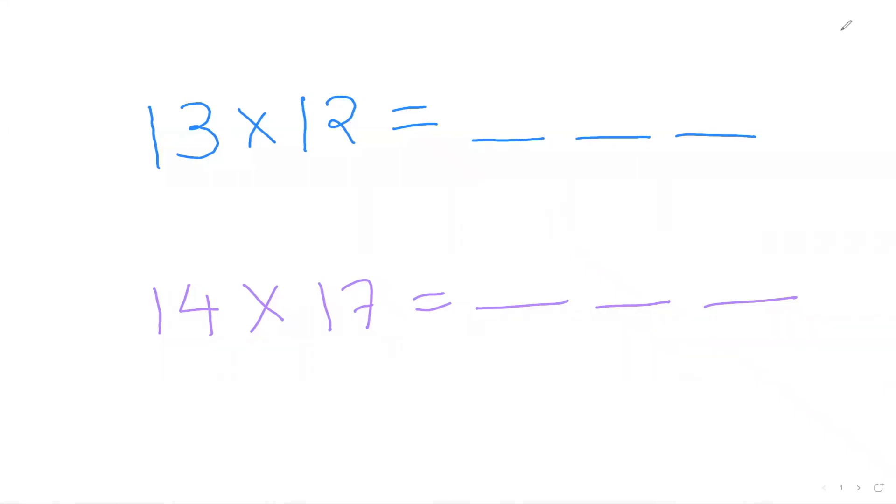Hi friends, in this video we are going to learn how to multiply two two-digit numbers smaller than 20 just in one second. That's true guys, just in one second. So I'm going to teach you the trick slowly and then once you understand, then we can speed up.